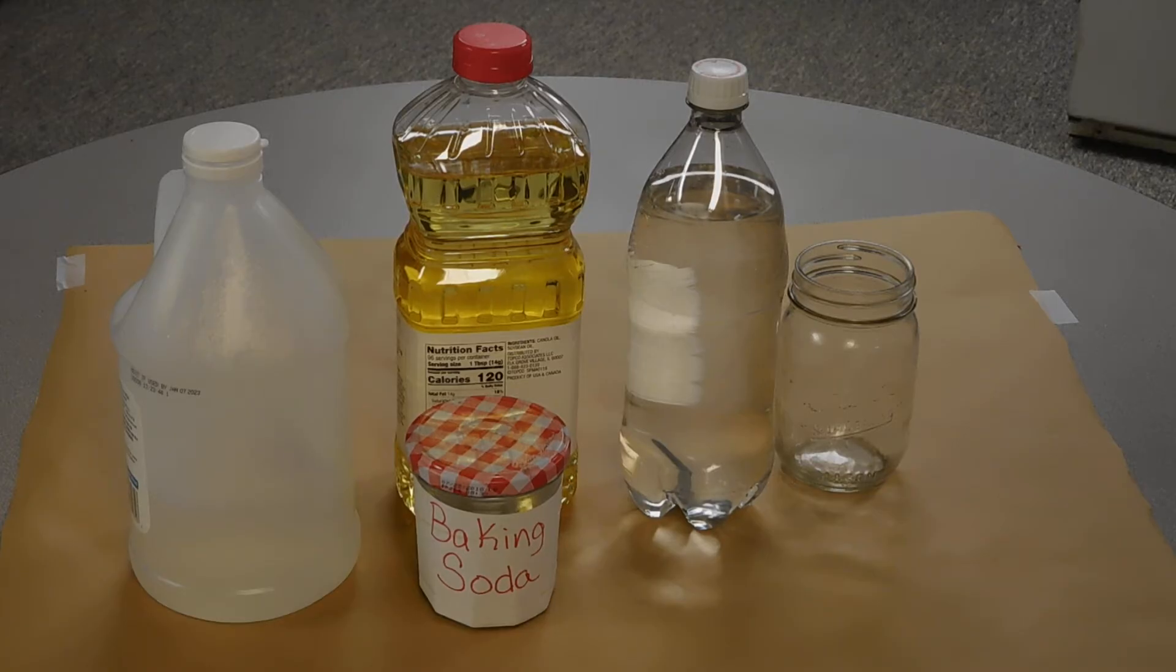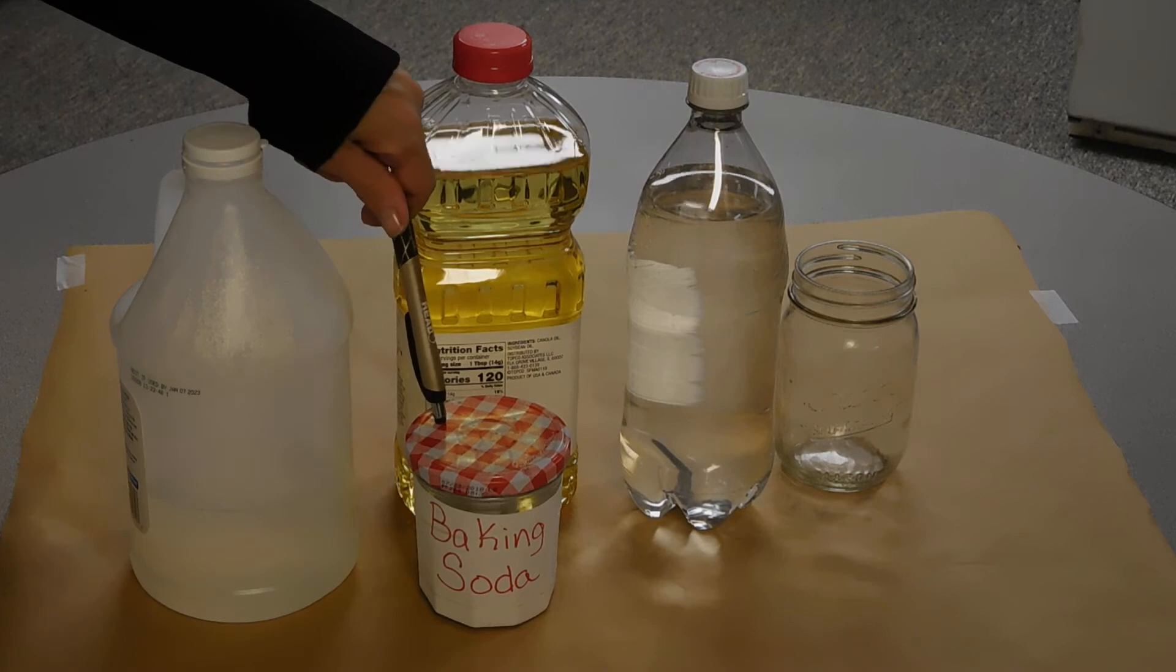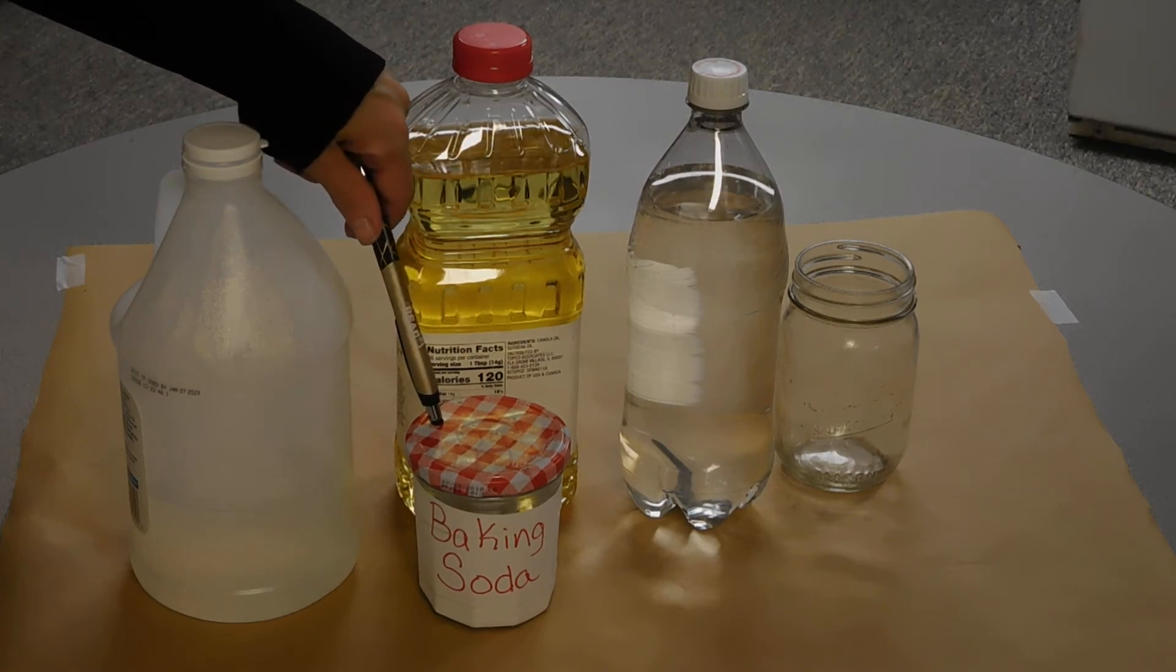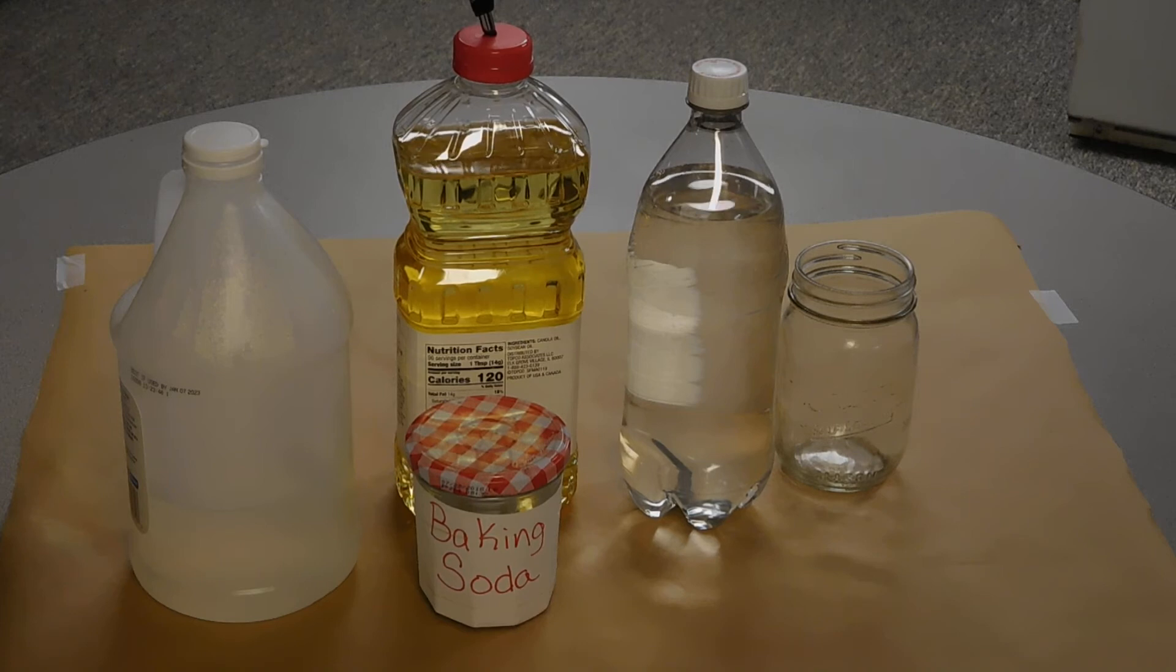So if you have either a black light lamp or a UV pointer, stick around. This will be fun. So we're going to use the same ingredients to make it that we used last time. So we have vinegar, baking soda, which you probably remember my jar of baking soda, vegetable oil, and the tonic water.